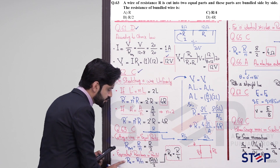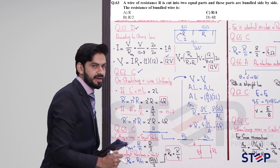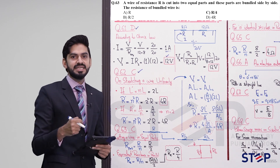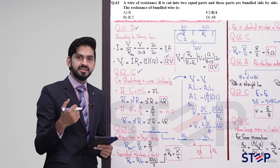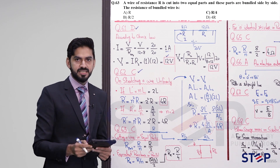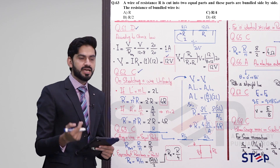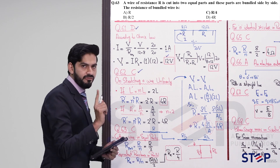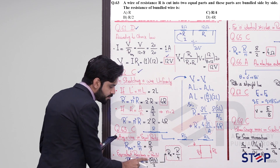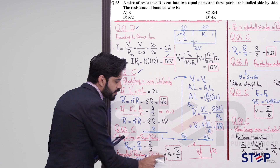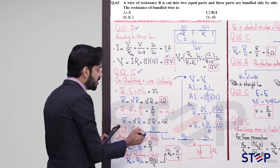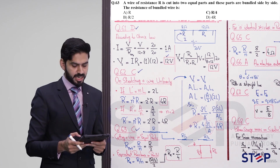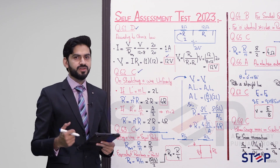Using the shortcut for identical resistors in parallel: R_eq = R_one / n. Here R_one = R/2 and n = 2, so R_eq = (R/2) / 2 = R/4. The answer R/4 is present in option C. So question 63's answer is option C.